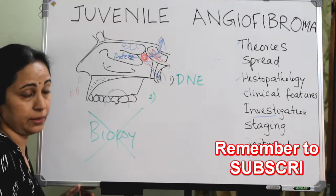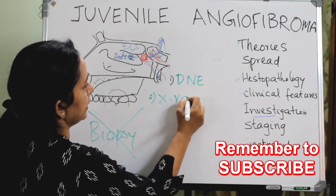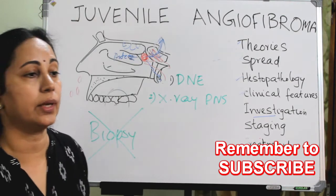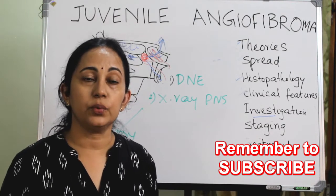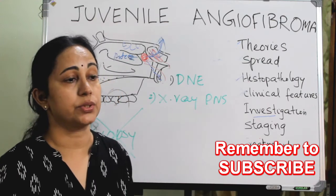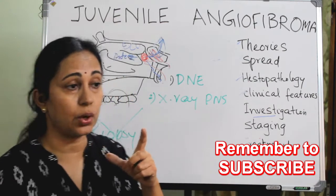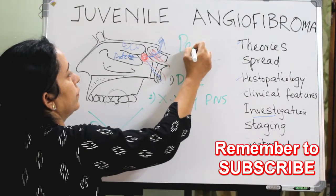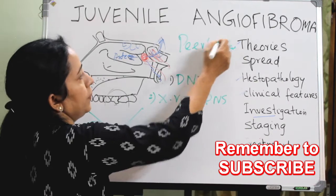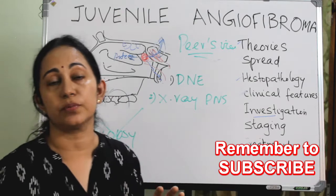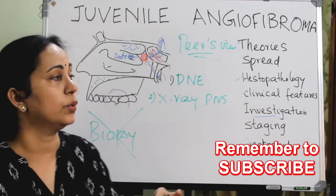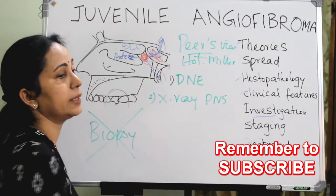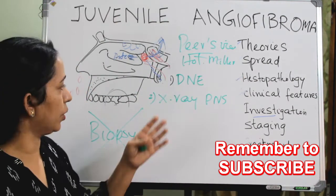The second investigation is X-ray PNS. You can do a Waters view, that is occipitomental view, or a modified Waters view, that is occipitomental view with open mouth, otherwise called Pierce view. In that you can see the sinuses, and in the lateral view you can see the Holman-Miller sign — that is anterior bowing of the posterior wall of the maxilla on X-ray PNS.